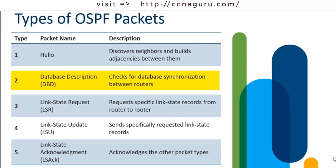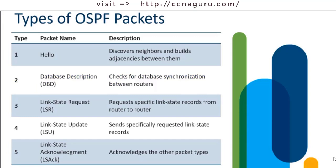The Type 2 is the DBD — that's the Database Description packet. This contains an abbreviated list of the sending router's link state database, and it is used by the receiving router to check its own link state database against the sender's. These link state databases must be identical between both routers within the same OSPF area.